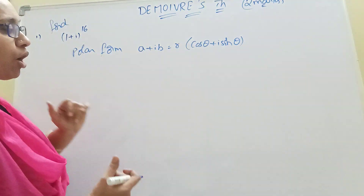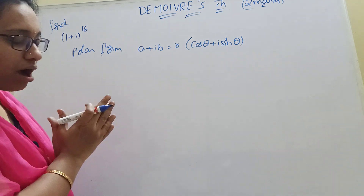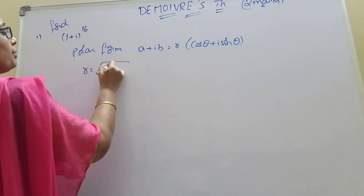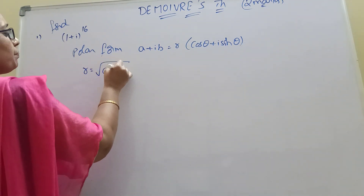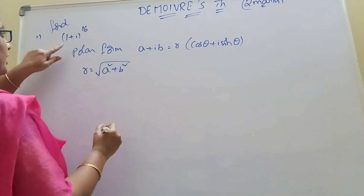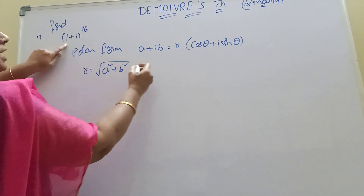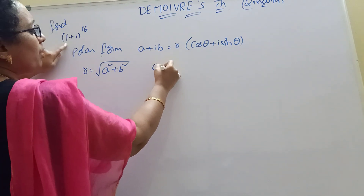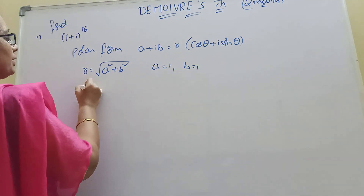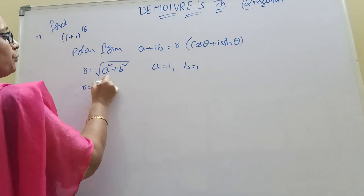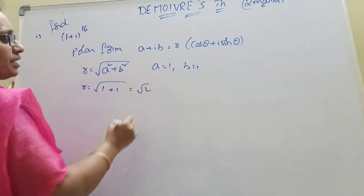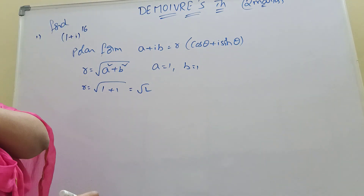Yeah, first you should find r. How to find r? R equals square root of (a squared plus b squared). What is A here? Compare in this equation: A equal to 1, B equal to 1. Now, R equal to root of (1 squared + 1 squared) = root 2.